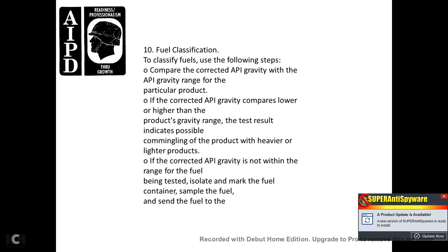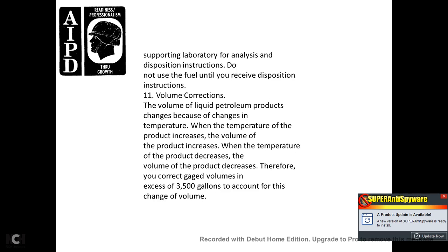10. Fuel classification. To classify the fuel, follow these steps: compare the corrected API gravity to the API gravity range of the particular product. If the corrected API gravity is lower or higher than the product gravity range, the test results indicate the possibility of commingling with heavier or lighter products. If the corrected API gravity is not within the range of the fuel being tested, isolate and mark the fuel container, collect a sample, and send it to the supporting laboratory for analysis and disposition instructions.